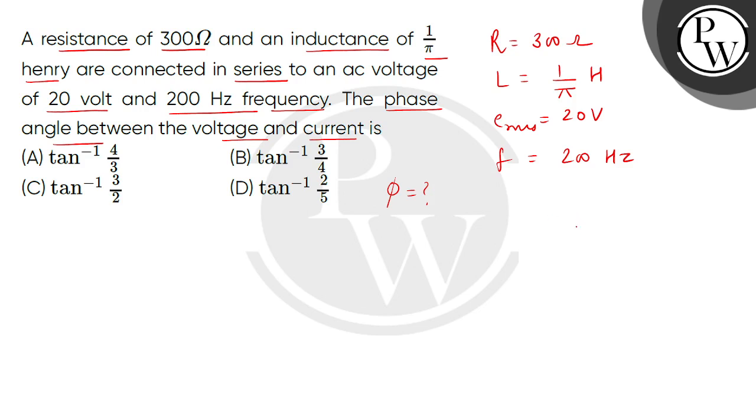So first of all, let's take a phasor diagram. So this is ER and this will be ERMS. Now children, we will represent resistance on the horizontal axis and reactance on the vertical axis.